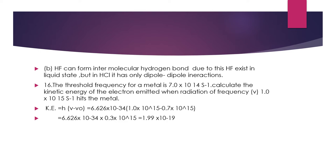Question 16: The threshold frequency for a metal is 7 × 10¹⁴ s⁻¹. Calculate the kinetic energy of the electron emitted when radiation of frequency ν = 1.1 × 10¹⁵ s⁻¹ hits the metal. We use KE = h(ν − ν₀), where h = 6.626 × 10⁻³⁴ J·s. Converting frequencies to the same power of ten and substituting, we get KE ≈ 1.99 × 10⁻¹⁹ J. Please double-check all calculations.